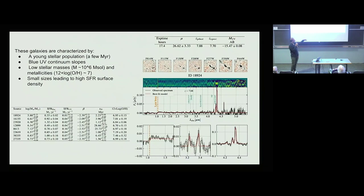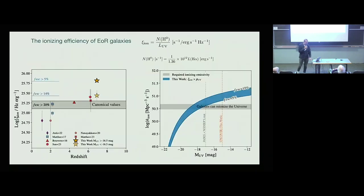And this is representative of the whole population, actually, this sample, where they have very low masses, very low metallicity, and blue UV continuum slope.